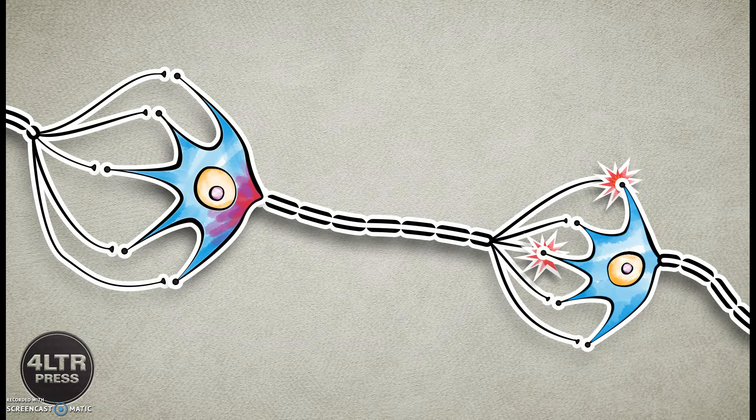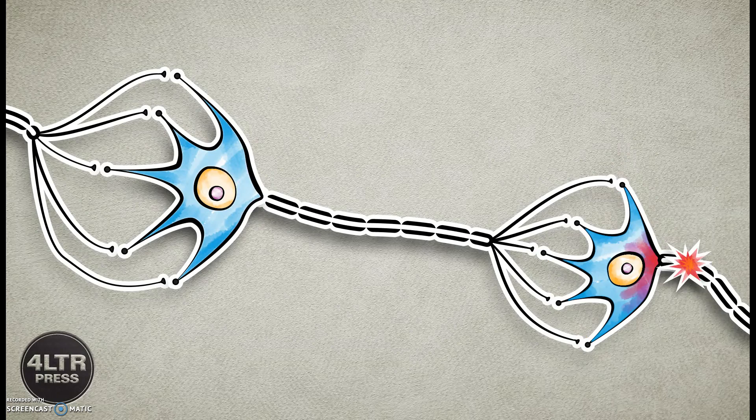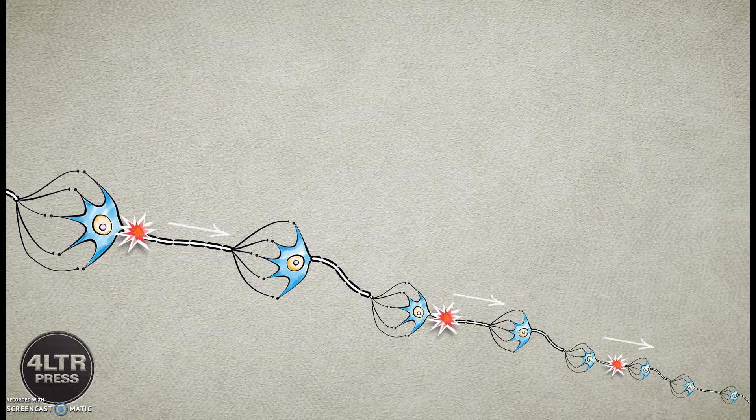By means of the action potential traveling down the axon, information eventually passes from one neuron to another, or to glands or muscles.